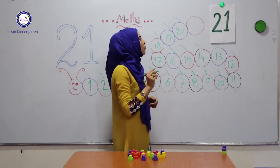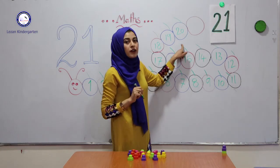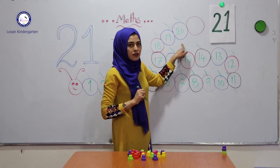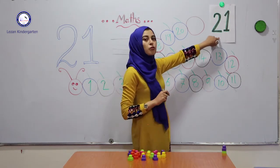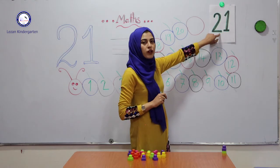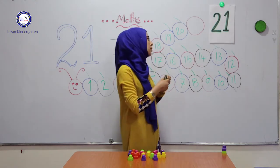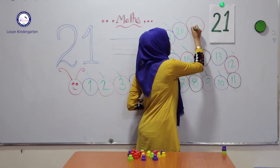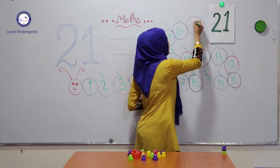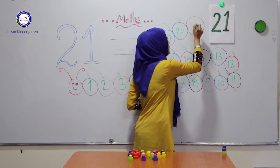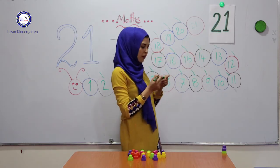Let us know which number comes after number 20. Which number comes after number 20? 21. This is 21.